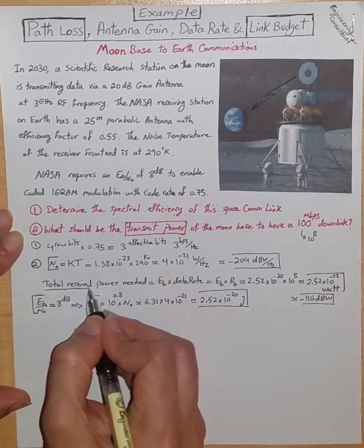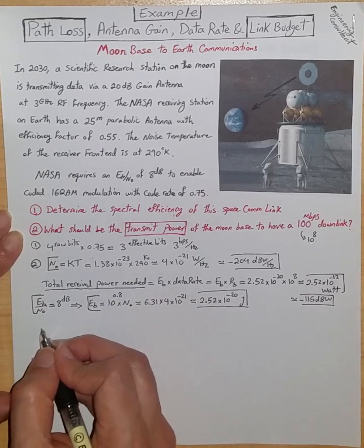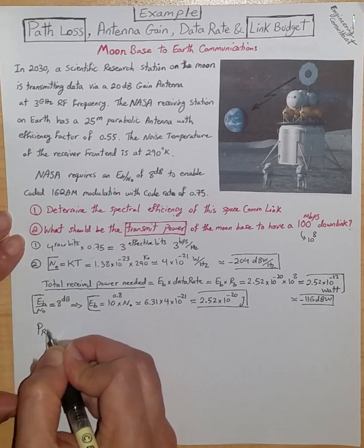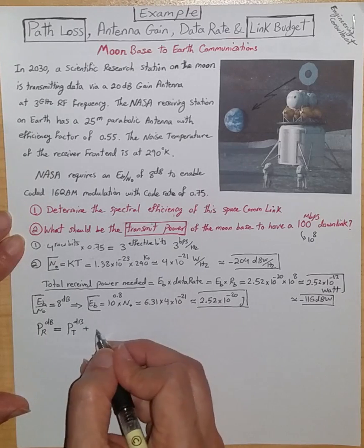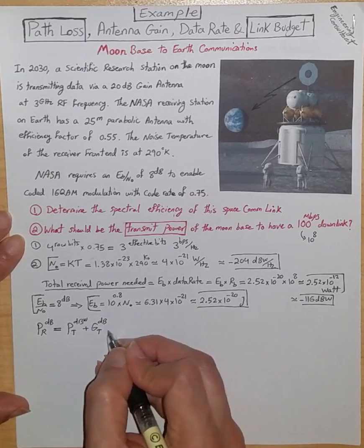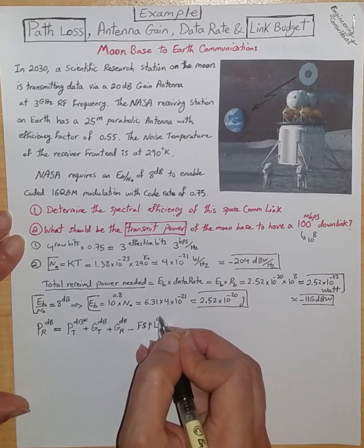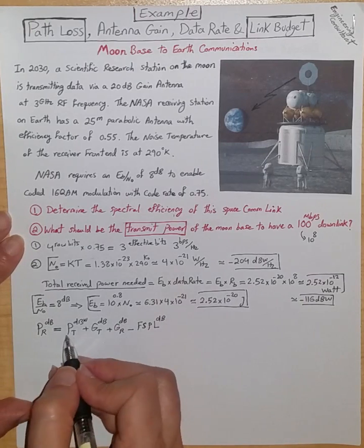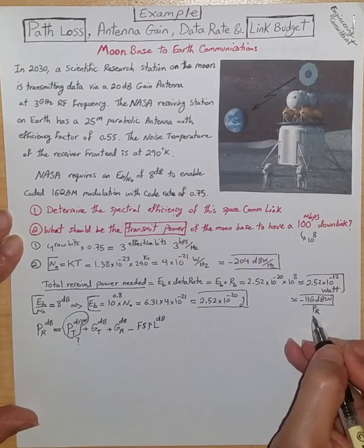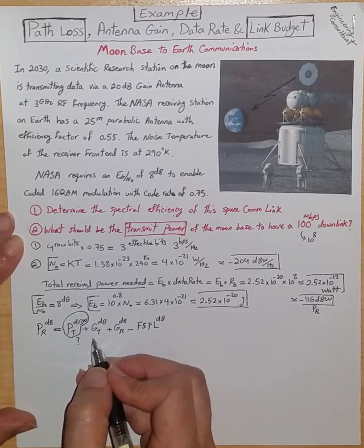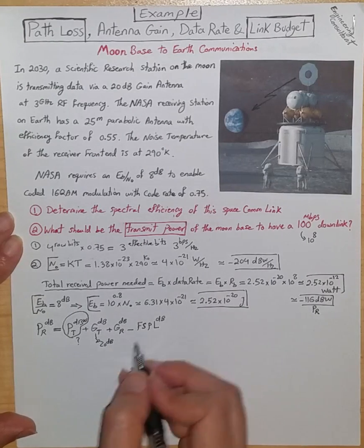Now what I need to do is, I know that the total received power in dB term, according to link budget, is just the transmitted power in dB plus the gain of transmit antenna in dB, which is dB watt, plus the gain of receive antenna, which is dBi, minus free space path loss in dB. So I need to compute these things. This is the part I would like to find. This is the part we just computed, the desired or required received power. GT is given to us, which is 20 dB antenna gain for transmit antenna. GR I need to compute, free space path loss I need to compute.